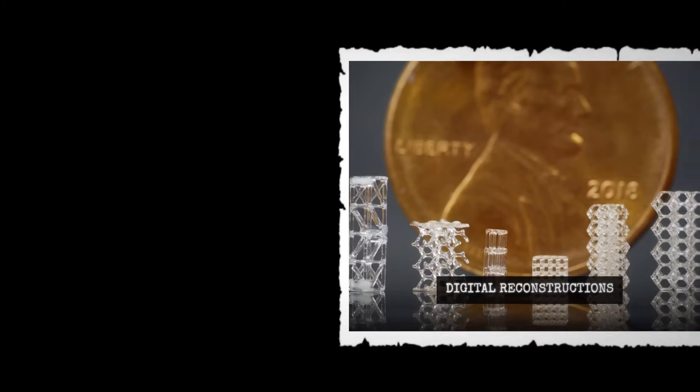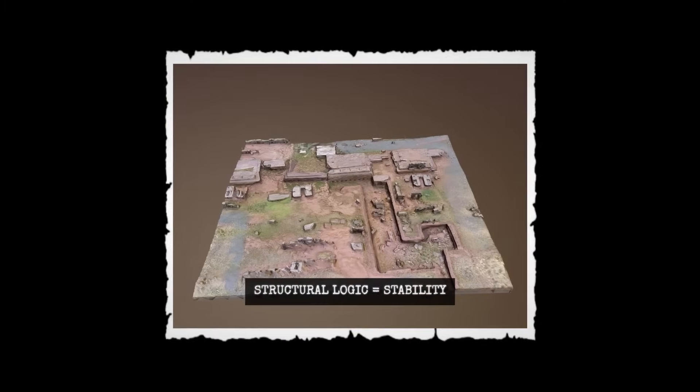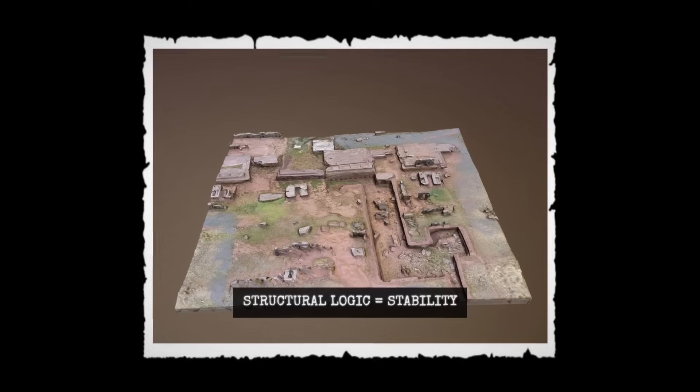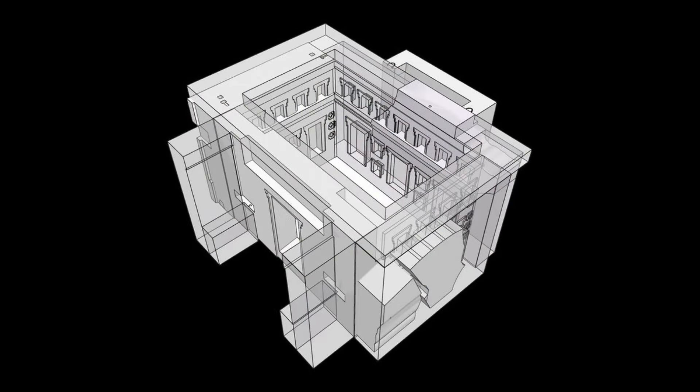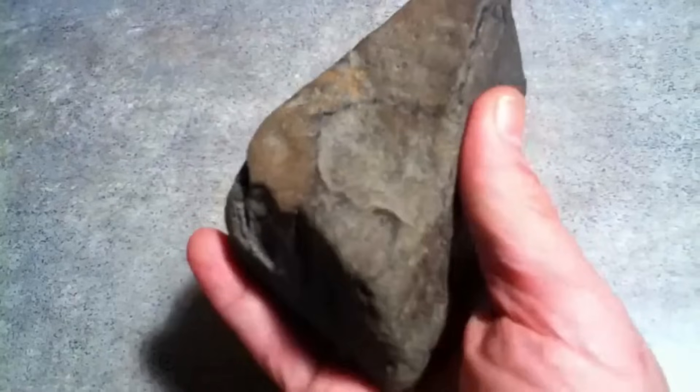Recent digital reconstructions, including high-resolution photogrammetry and three-dimensional modelling, have validated the structural logic of the original builders. These models confirm that the modular H-blocks, keyed foundations, and metal clamps work together to create an assembly that is both robust and flexible, a feat of engineering achieved with simple tools and a deep understanding of material properties.